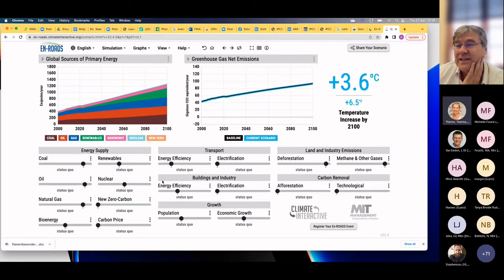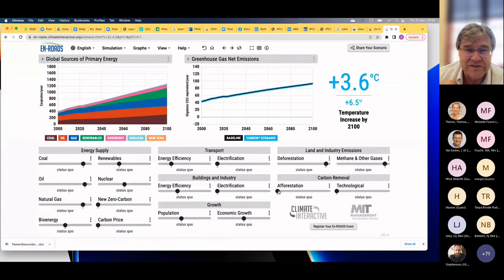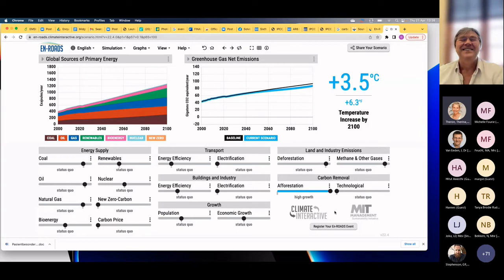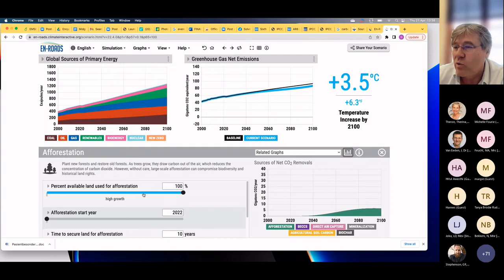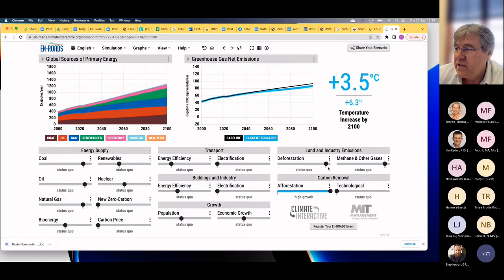The next one is afforestation. Let's plant millions of trees around the world and destroy our beautiful grassland ecosystems by planting trees in the wrong places. Afforestation, also not massively effective, is it? 0.1 of a degree. You can get a bit more into the detail of each of these things. That's also surprisingly not as effective as some people might think.